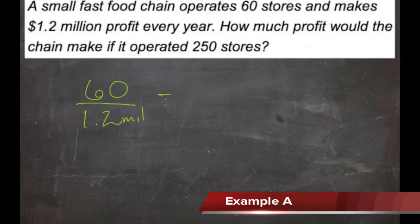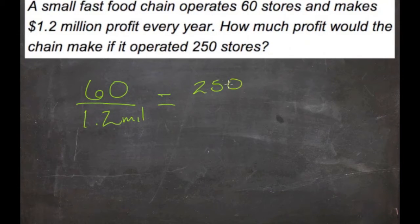Okay, so we set this up as a proportion. We have 60 compares to 1.2 million in the same way that 250 compares to some other number of millions. Now that we have a proportion, all we need to do is cross multiply.